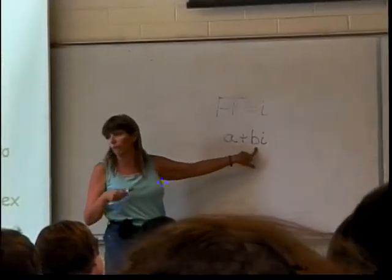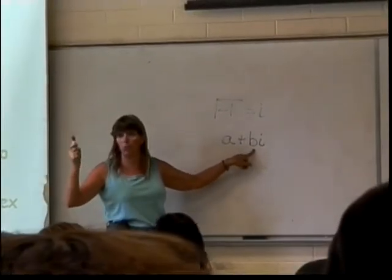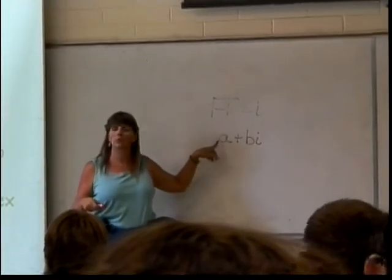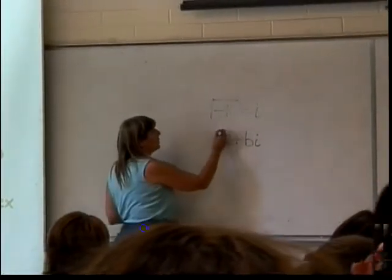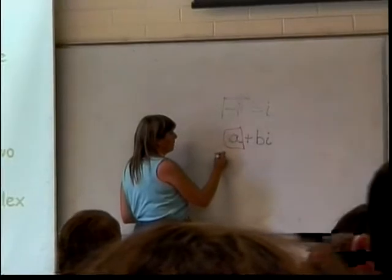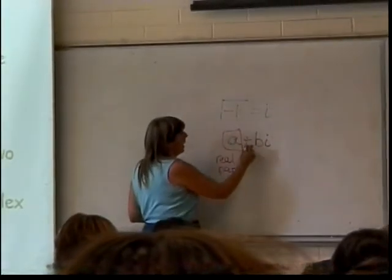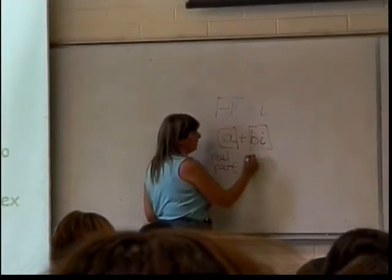So these are like five, negative five, a half, three quarters, square root of two. These can be any real numbers. They can even be zero. This part without the i is referred to as the real part, and this part with the i is the imaginary part.